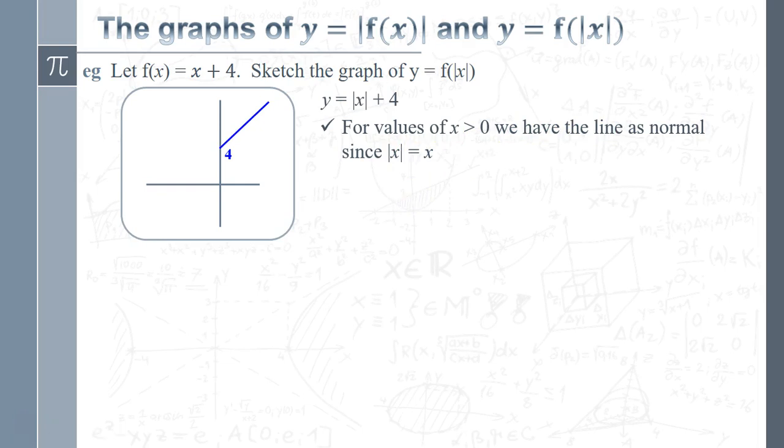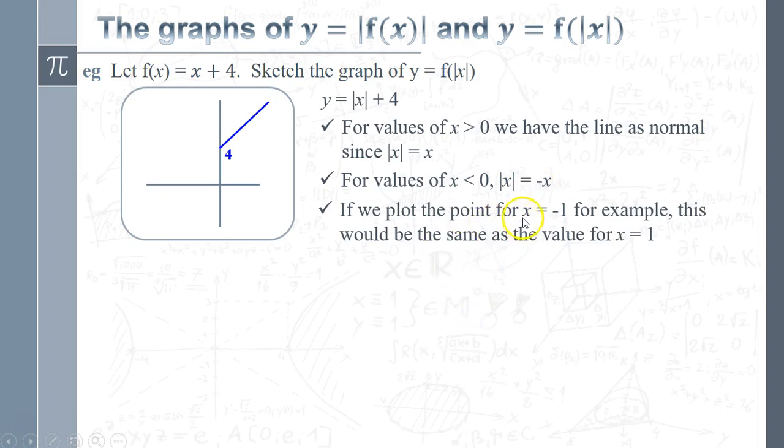When we've got negative values of x, then the mod x becomes minus x. So what's going to happen is if I was going to be plotting the point where x equals minus one, for example, that would be exactly the same as plotting the point when x is one. So for example, I'd have x is minus one, modulus of minus one is one. So I'm doing one plus four, which is five. So what we're getting is that happening.